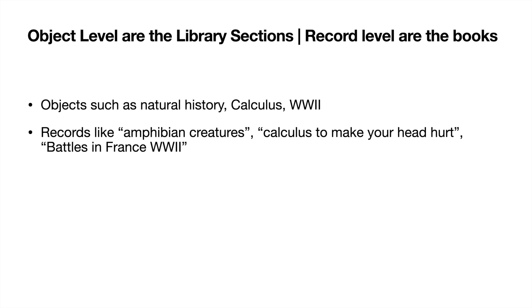To access specific sections in the library, you would need to be enrolled in a class teaching that specific subject. For calculus, you'd have to be enrolled in calculus to access that library section. To get access to the World War Two section, you'd need to be enrolled in a history class covering World War Two. If you're a fan of Harry Potter, think of this like the restricted section — you have to have a certain age level or be enrolled in a certain class to have access. That's a lot like how object level security works.